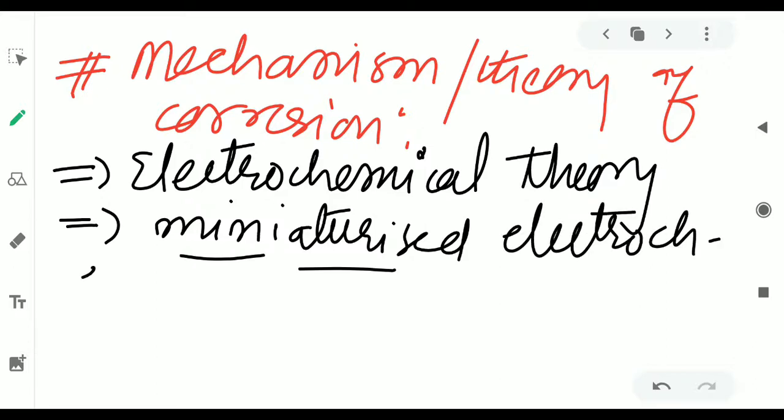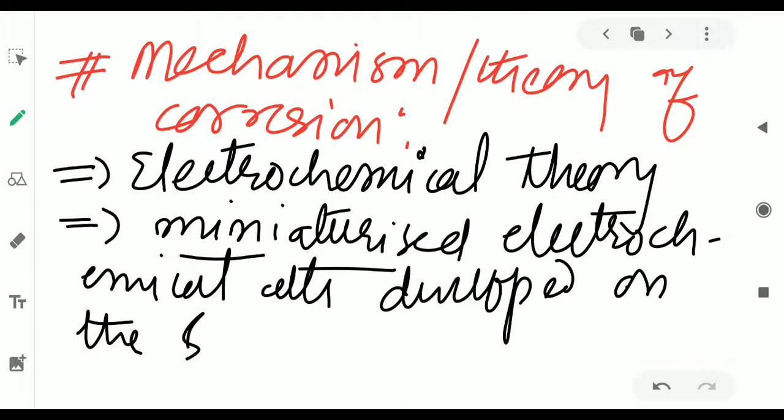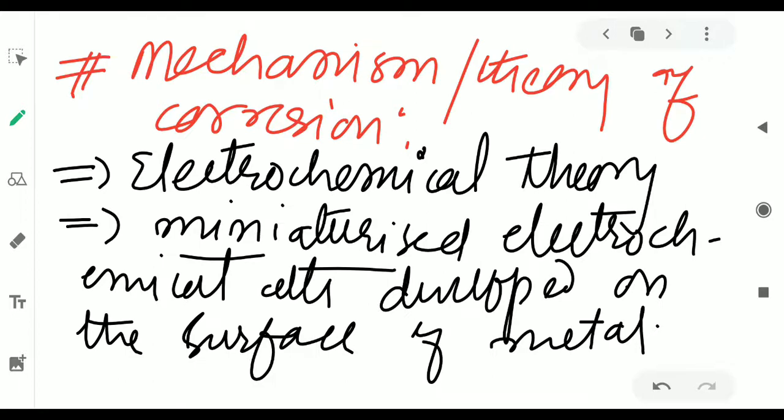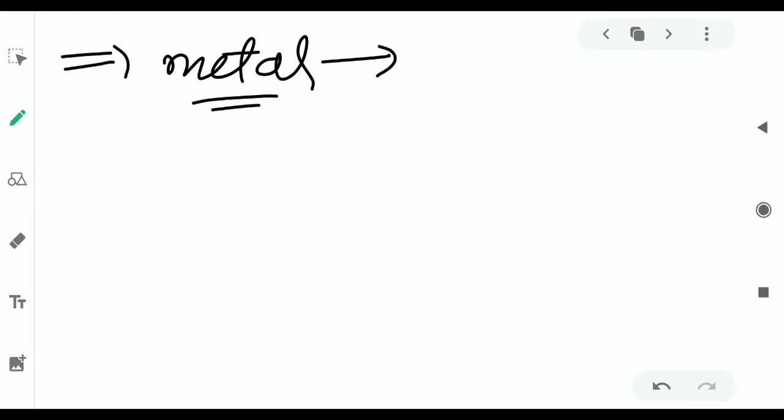On the surface of metal. And at these surfaces, the electrochemical reactions are taking place. And in these electrochemical reactions, metals get converted to different compounds. So, we can explain it by taking the example of corrosion of iron. That is called as rusting.